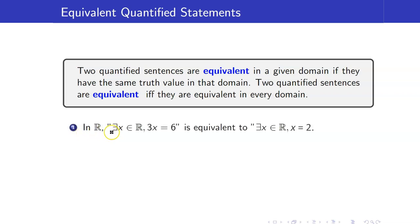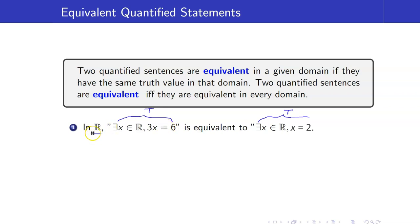For example, consider a quantified statement. If we are in the set of all real numbers, we just consider the truth value. If both statements are true, we say that they are equivalent in ℝ. And if these two are always equivalent for every possible domain, then they are equivalent — not just in ℝ, but for every possible domain.